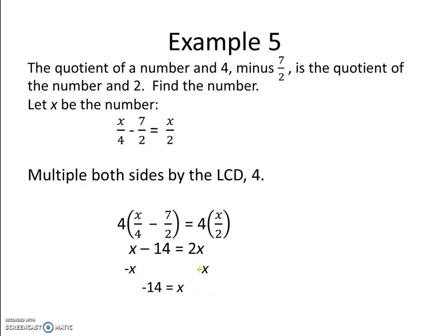Example 5 is another word problem. The quotient of a number and 4 minus 7 halves is the quotient of the number and 2. Find the number. First we let x be the number, and we also have to know that the quotient is the answer to a division problem.